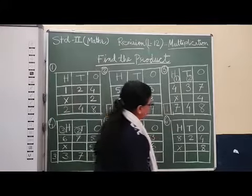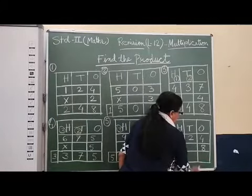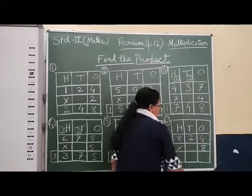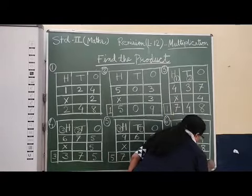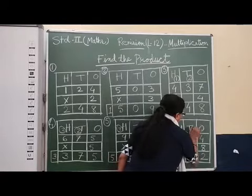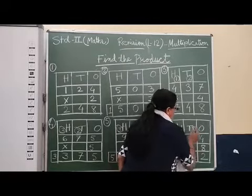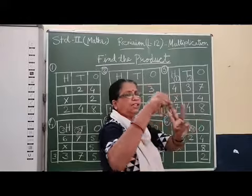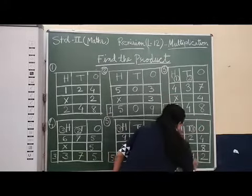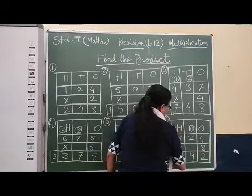Okay, last one. Table of eight. One's place, four times eight, thirty-two. I will write two here and three here. Then two times eight, sixteen. Sixteen plus three, seventeen, eighteen, nineteen. Nine I will write here and one I will write here.